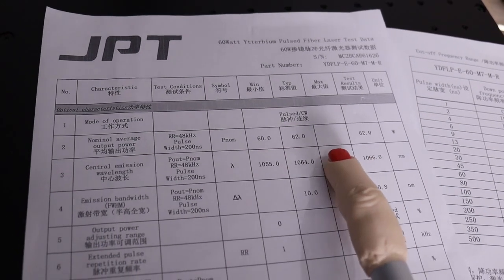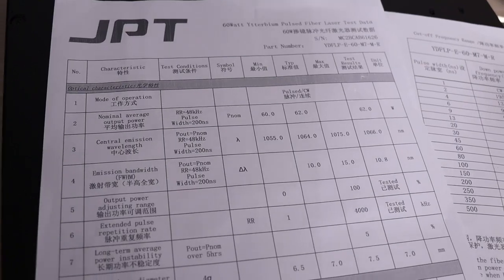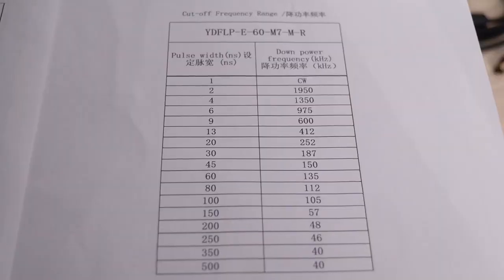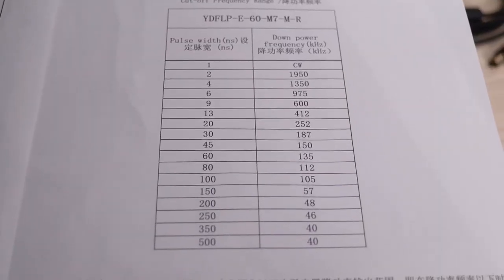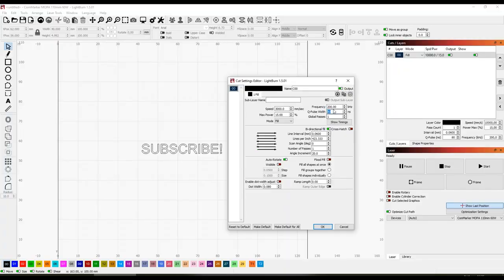With the machine, you also get a data sheet of the JPT laser source installed in this machine, which tells you the basic information about this laser source, and it also illustrates the pulse waveform and a cutoff frequency range, so you can better understand the operating limits of the source. Now let's do some practical tests to see what this machine can really do.